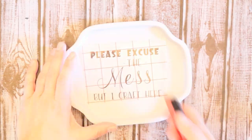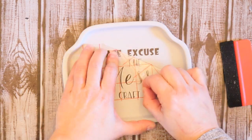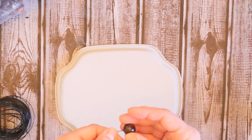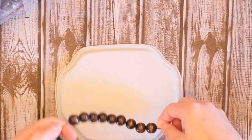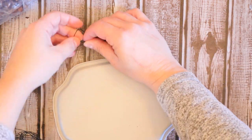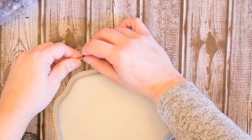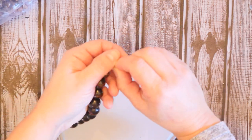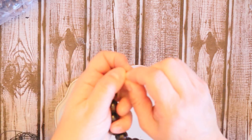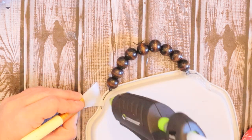I found this little saying on Pinterest, and I cut it out with my Cricut and it says please excuse the mess, but I craft here. That is literally the story of my life because I craft in my dining room. Then just to finish it off a little bit, I decided to add some wooden beads to the top just to give it a little bit more of a decorative look. I added on a few beads, tied off the ends and just twisted them so the beads will stay put. Then I just hot glued it into the little ridge on the back of the tray.